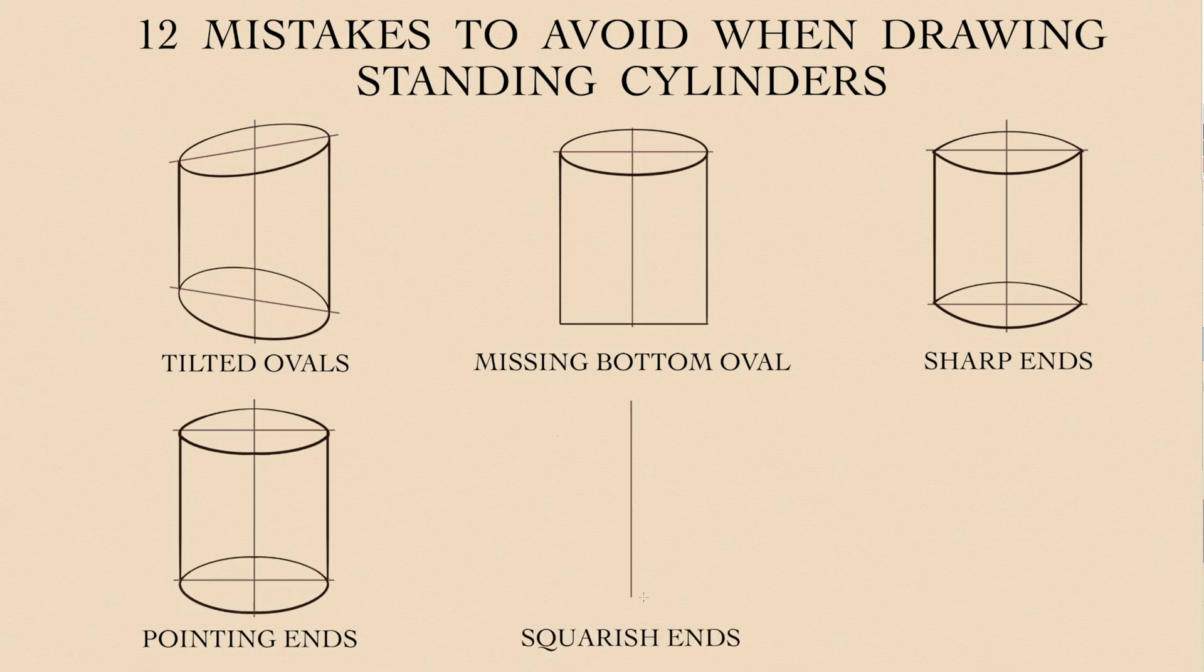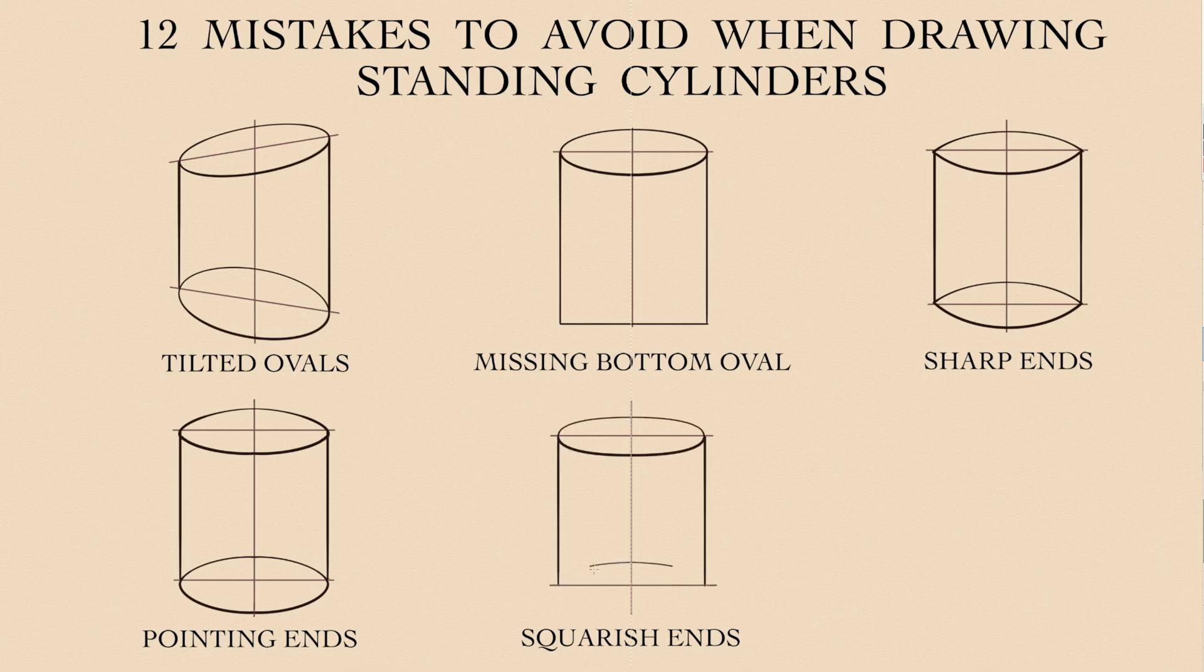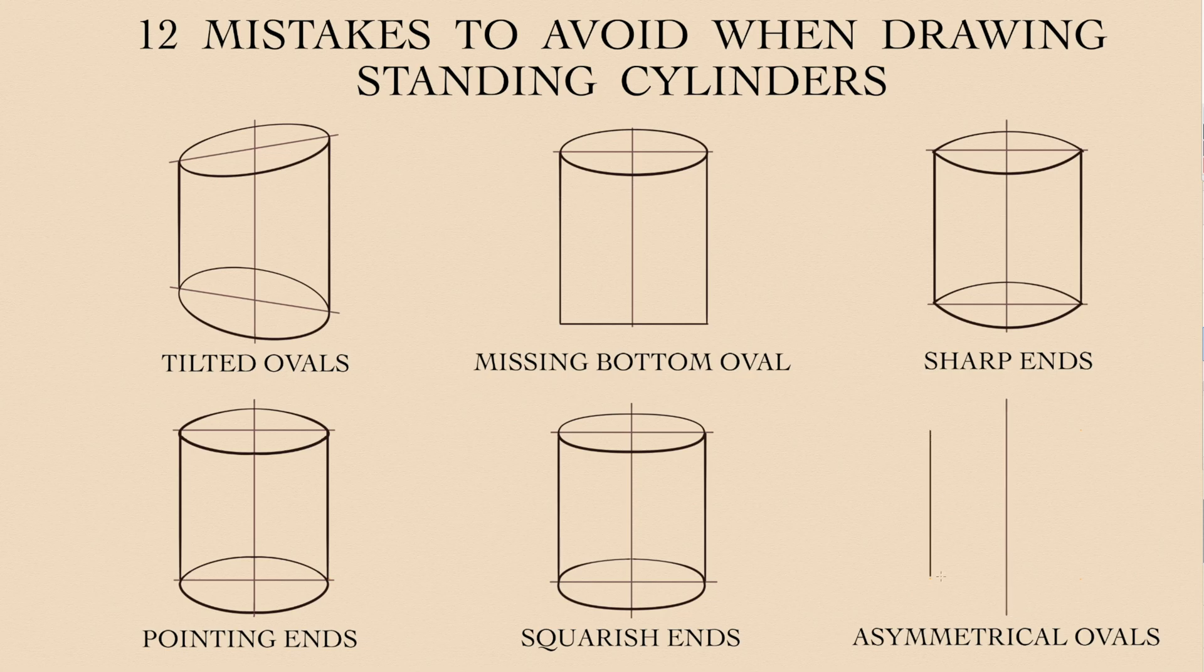The opposite to pointing ends is drawing squarish ends. Ovals must be perfectly elliptical. If these two drawings seem to you correct, then you need to watch my video on how to draw perfect ovals. Another common mistake is drawing asymmetrical ovals. This error is easy to avoid if you use axes of symmetry.